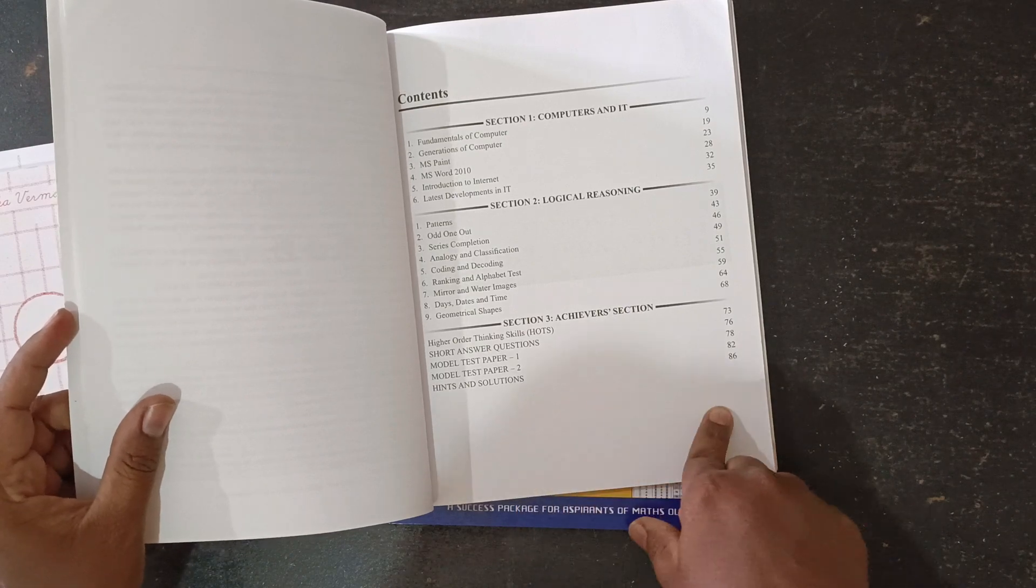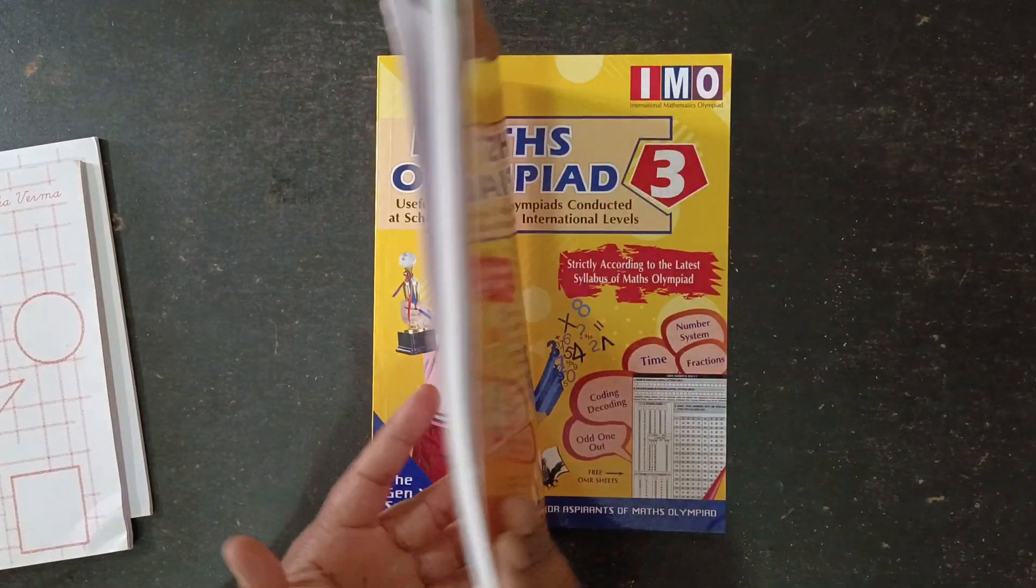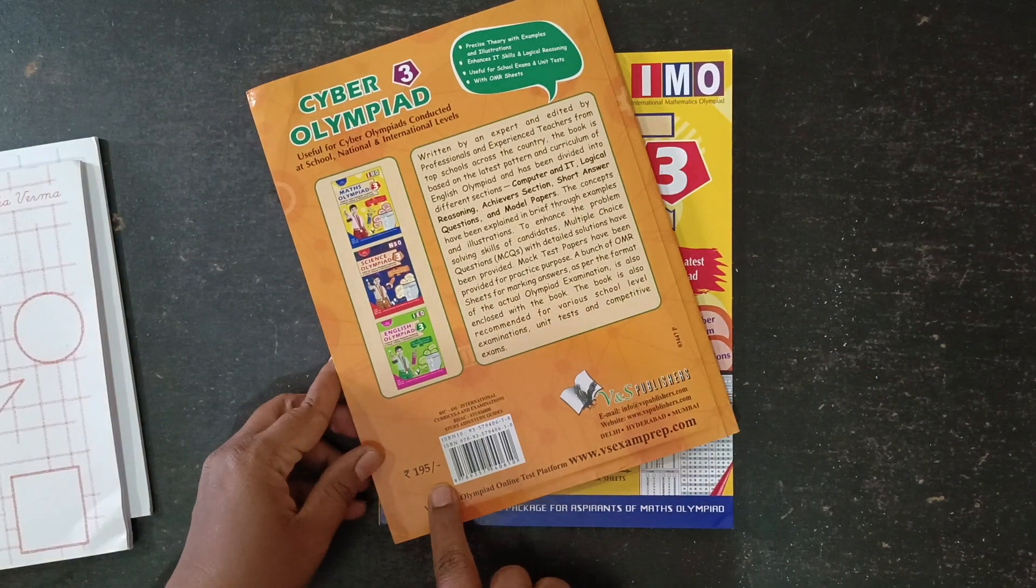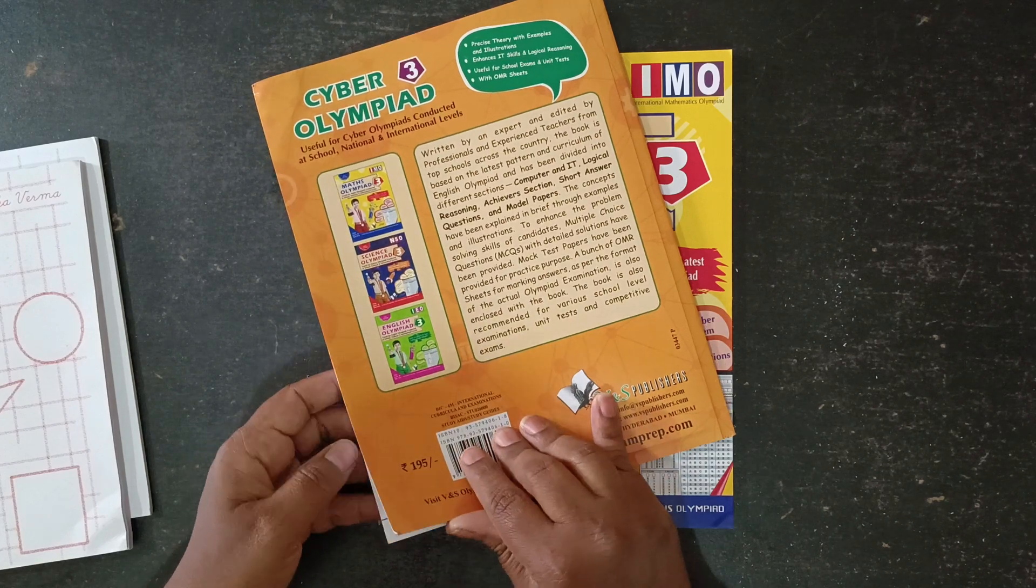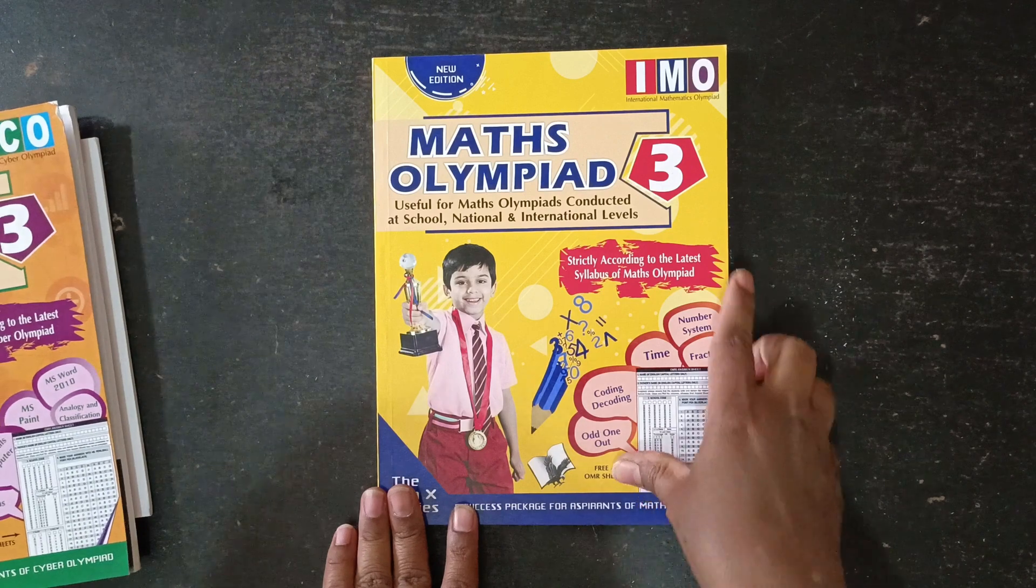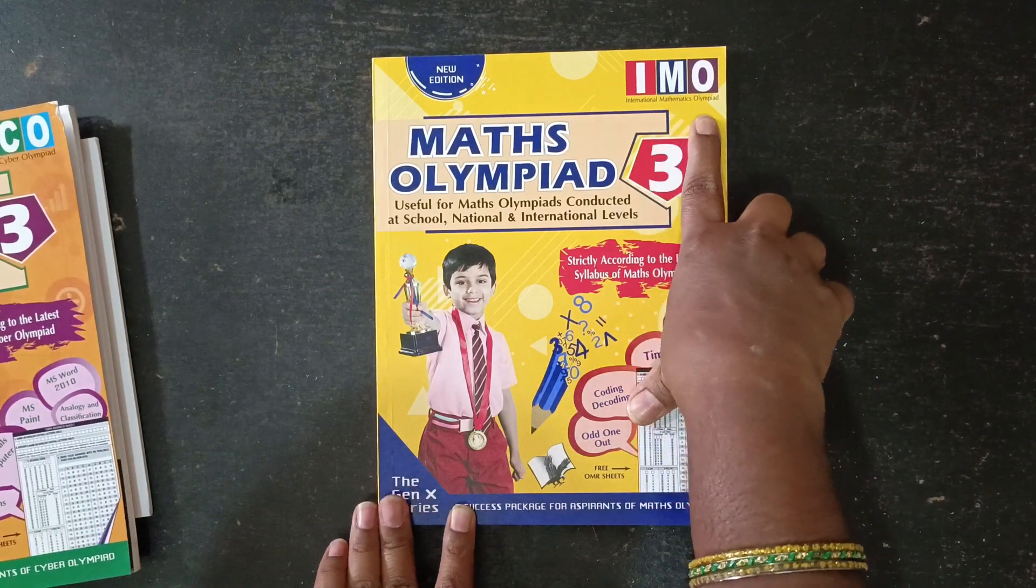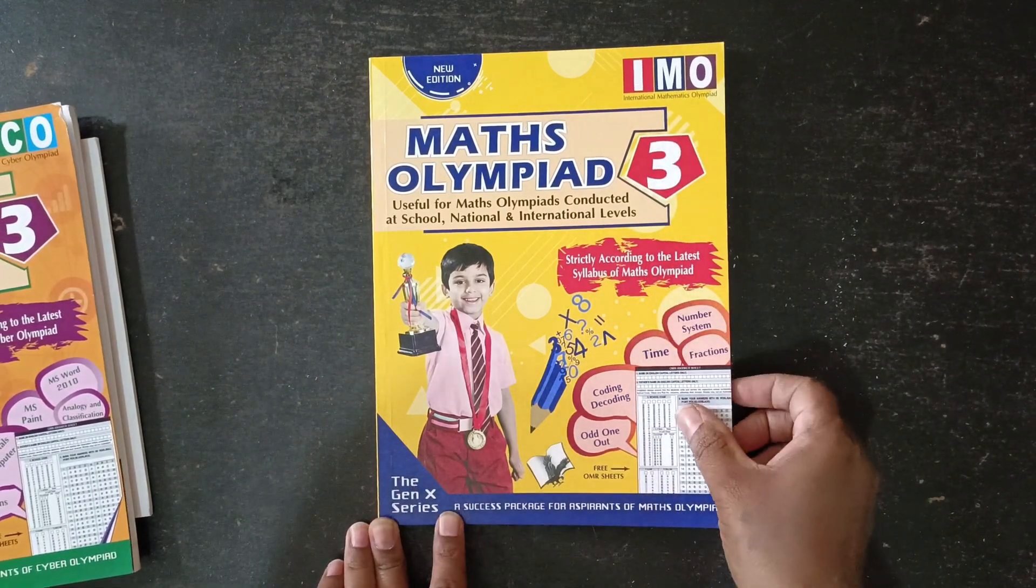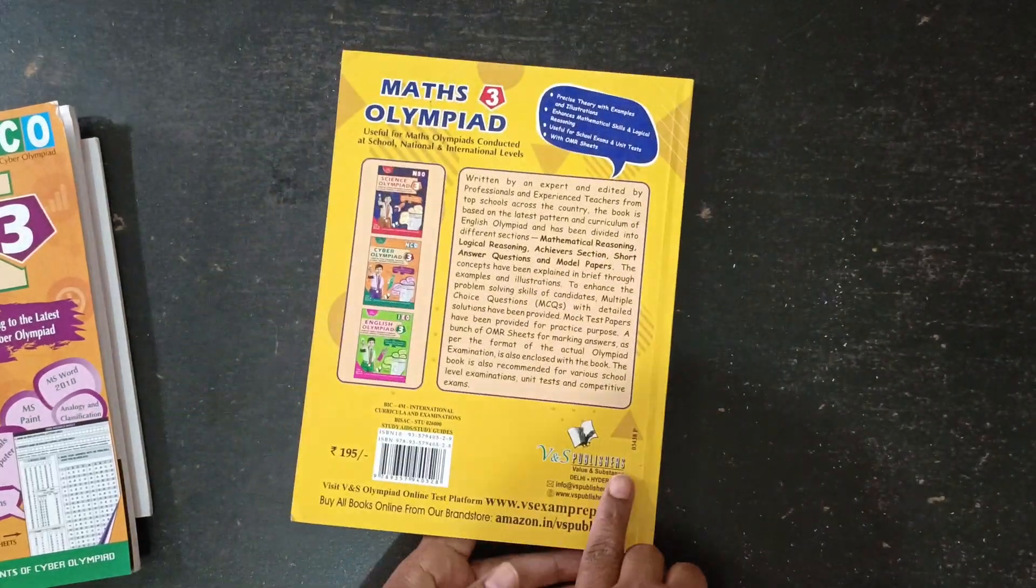This book's cost is 195 rupees. This is Math Olympiad - IMO, International Mathematics Olympiad, 195 rupees.